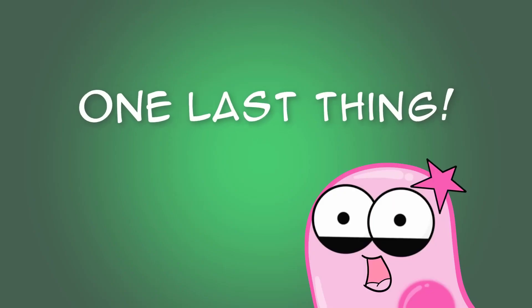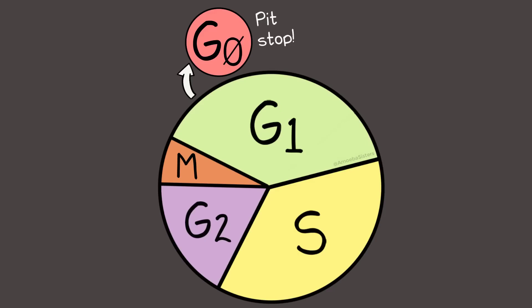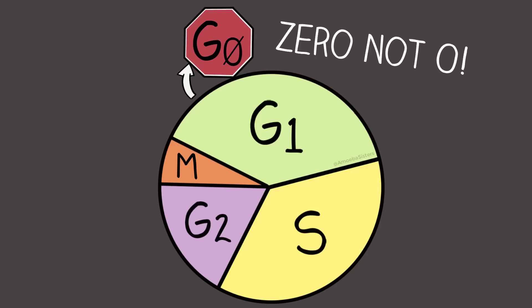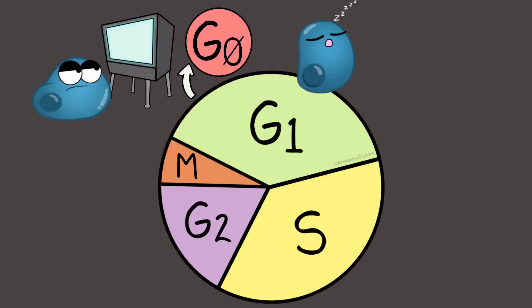One last thing to mention. There are some cells that don't go through the phases we mentioned because they're actually in G0. That's a zero, by the way, and not an O. Because if it was an O, then it's a go and G0 is kind of the opposite of that. G0 is a resting phase. Now, cells here are still performing cell functions, but they're not preparing to divide.